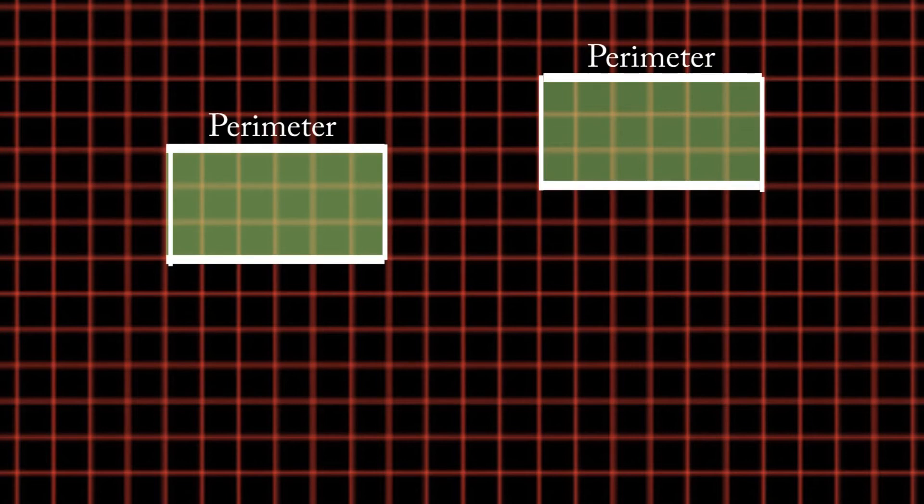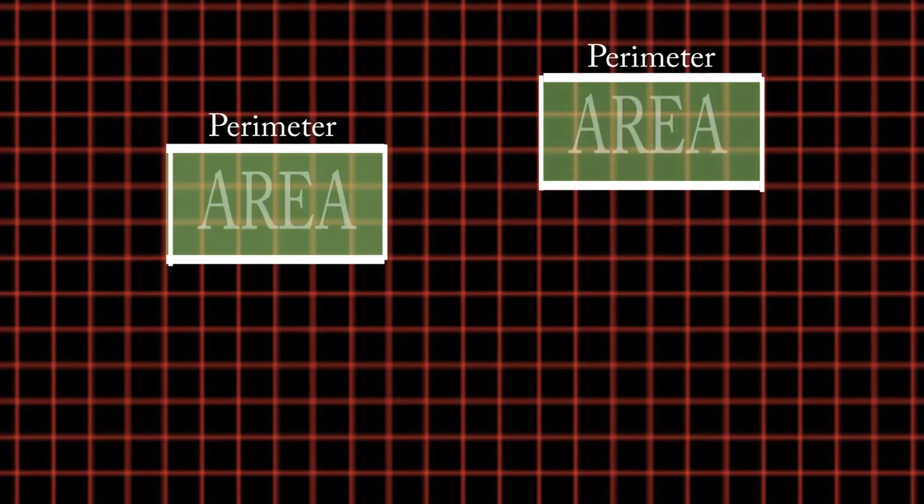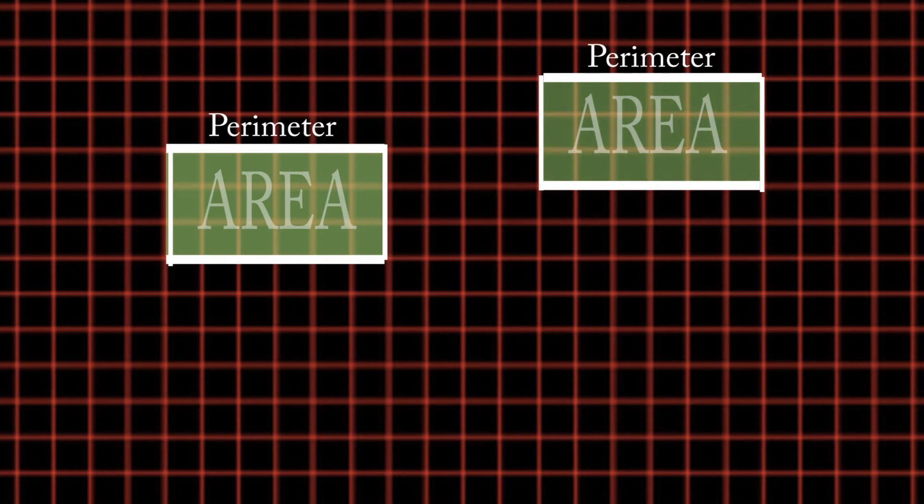Now let's see what happens if I slide this little rectangle up over here. It looks to me like it's got exactly the same perimeter and exactly the same area, so it's congruent. Now I'm going to rotate it a bit. I rotated it and it's congruent to the other copies. It has the same area and the same perimeter.